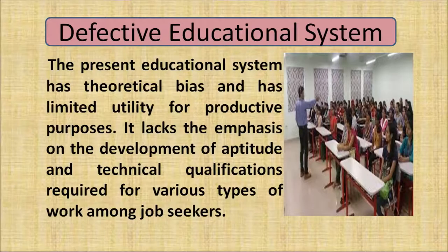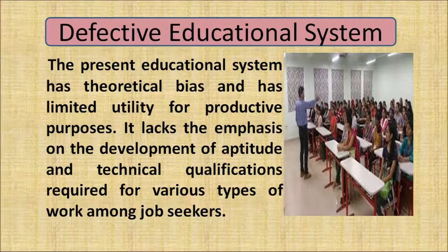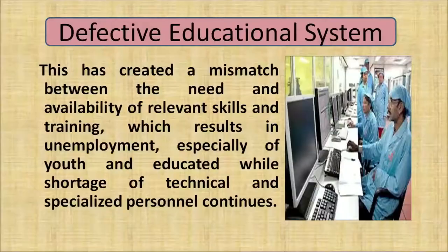Another reason for unemployment is the defective educational system. The present educational system has a theoretical bias and has limited utility for productive purposes. Practical orientation is missing. It lacks emphasis on the development of aptitude and technical qualifications required for various types of work among job seekers. There is a gap between industry and academia, and people lack the required skill sets needed in industry. This mismatch between the need and availability of relevant skills and training results in unemployment.